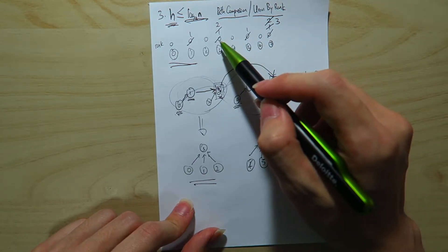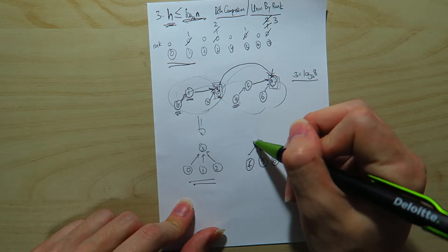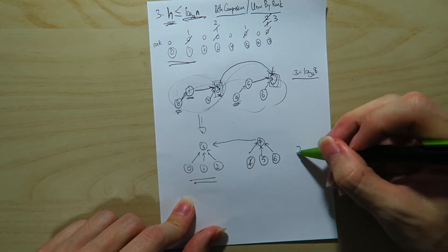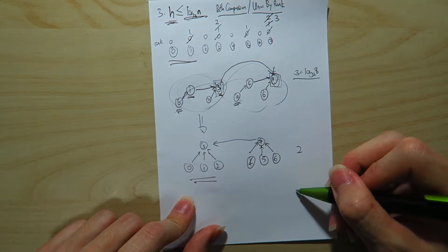And eventually, the two have the same rank. So we're just going to point one way, right? So currently, the height of the tree is 0, 1, 2, right? Height is 2. So how do we get it to 1?